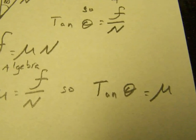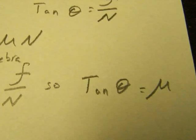So, if we can tilt our surface, all we need to know is the angle at which it starts to slide, and we will be able to calculate the coefficient of friction without having measured a single force.